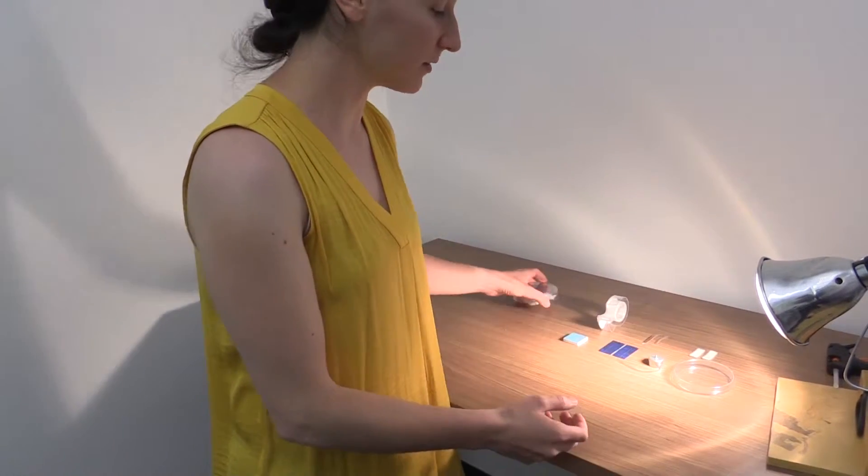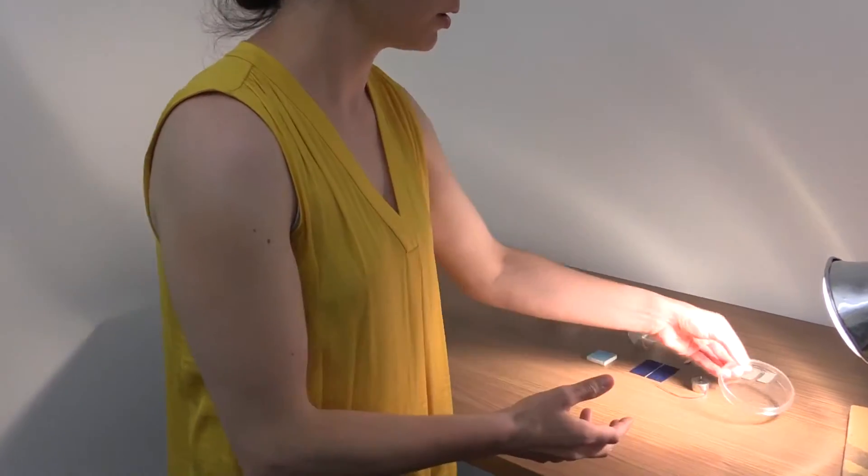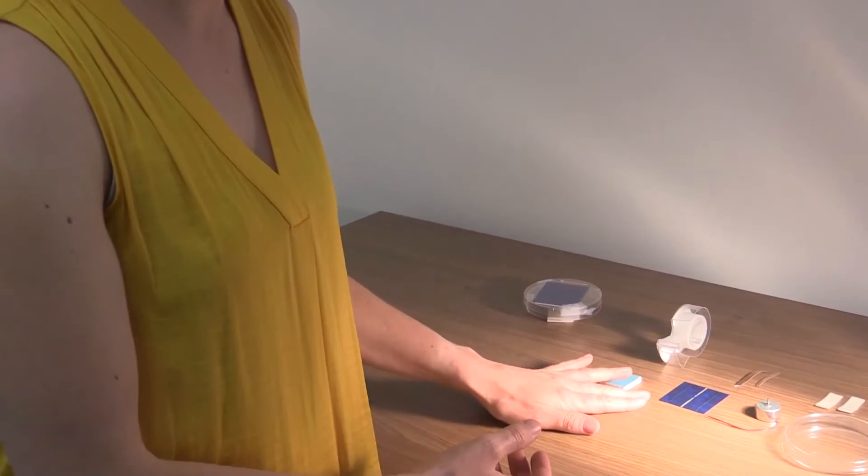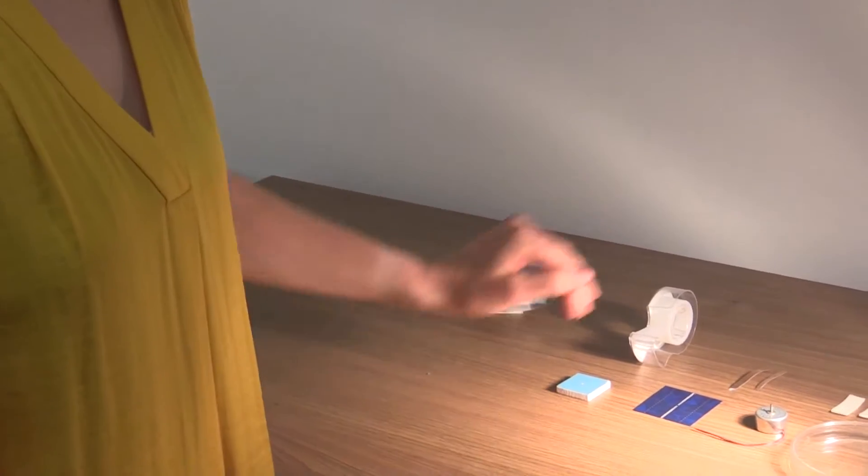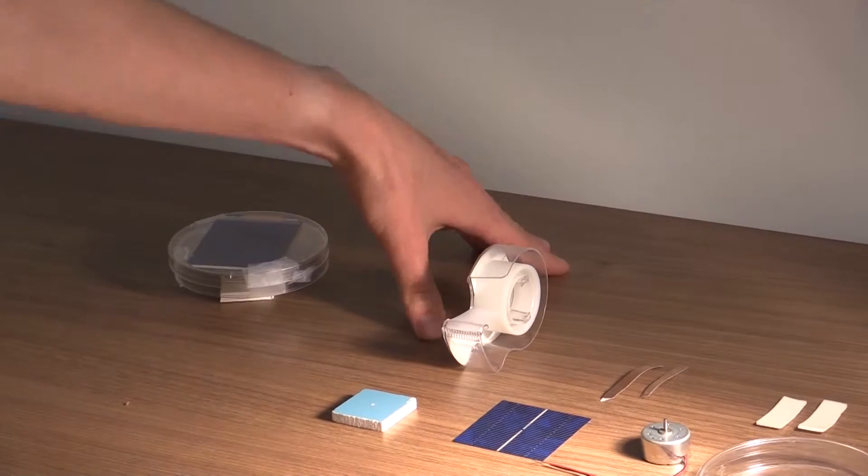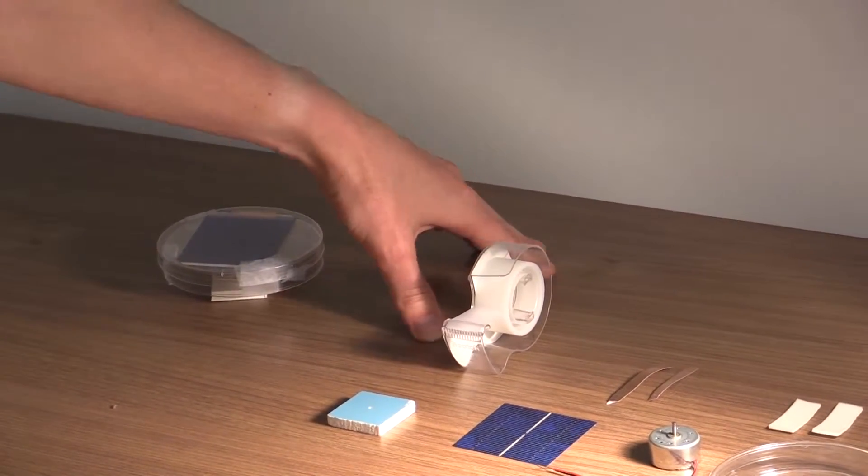For this activity we're going to need a plastic petri dish, a motor, a solar panel, a base, foam tape to attach the motor, copper tape to attach the wires, and scotch tape to hold everything together.